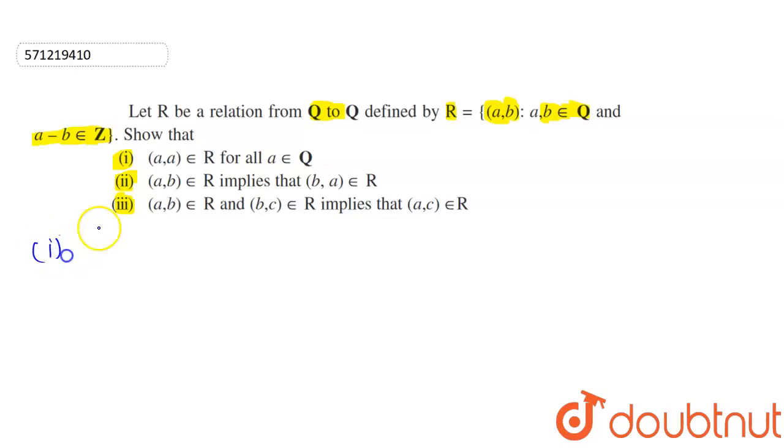Let us take the first part. Let's check whether (a,a) belongs to R for all a ∈ Q. If I take (a,a), according to the relation, the difference must belong to an integer. This implies a-a = 0 which belongs to the set of integers. So it follows that (a,a) ∈ R.